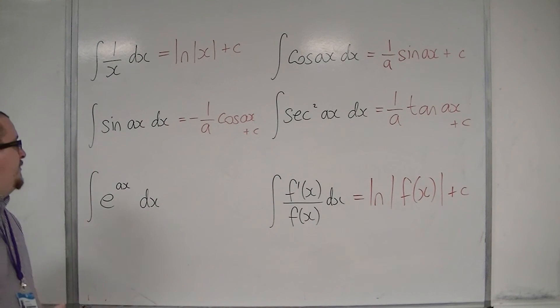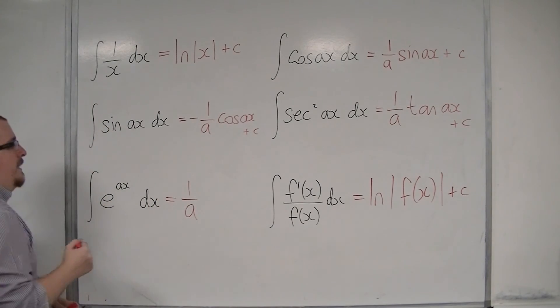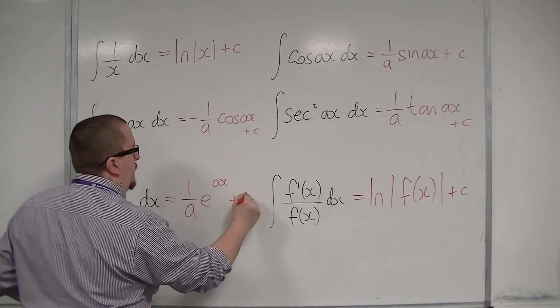And last but not least, you have ∫e^(ax) dx. So this, in a very similar way, must have this 1/a appearing. So 1/a, and then you have e^(ax) + c.